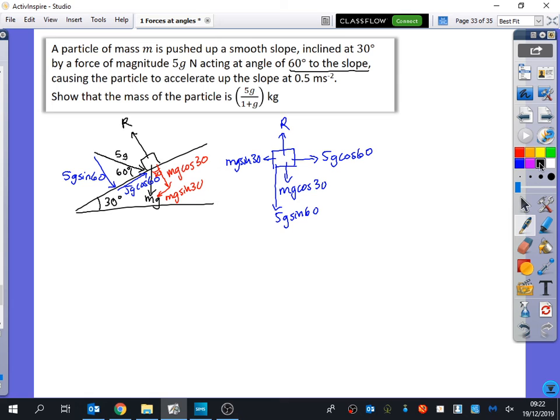All I'm going to do is F equals MA and they're telling us it's going up the slope. So I'm going to resolve it in that direction which it's moving in. It will be the resultant force is 5G cos 60 minus MG sine 30, that's the resultant force which equals the mass times the acceleration. And the acceleration in the question is 0.5. Can anybody tell me the value of cos 60? A half and the value of sine 30? A half.